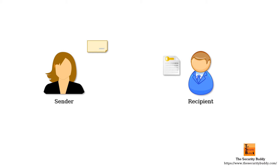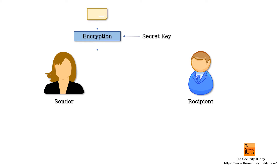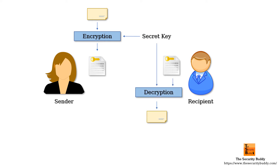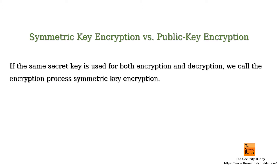The sender can encrypt the data using a secret key and send it across. The recipient can use the decryption key to decrypt and read the encrypted data. If the same secret key is used for both encryption and decryption, we call the encryption process symmetric key encryption. And in public key encryption, two different keys are used for encryption and decryption.